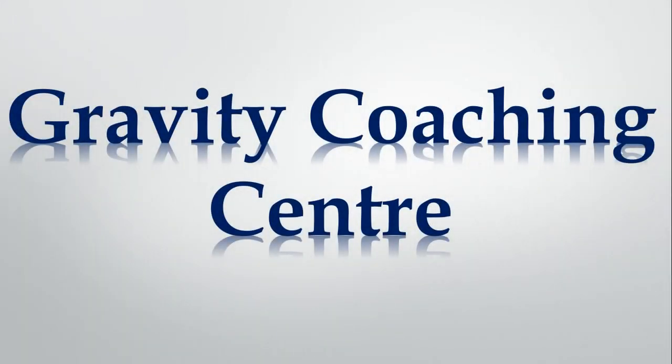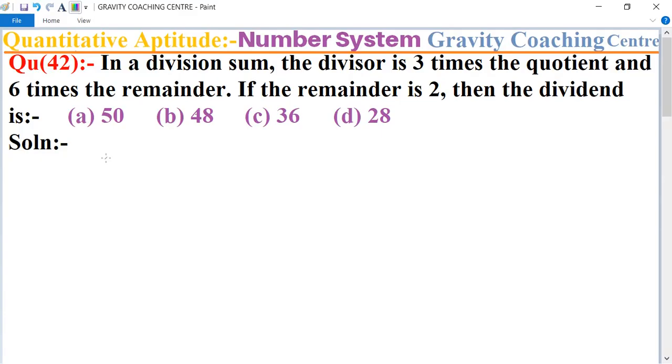Welcome to our channel Gravity Coaching Center. Quantitative Aptitude, chapter Number System, question number 42. In a division sum, the divisor is 3 times the quotient and 6 times the remainder. If the remainder is 2, then the dividend is what?